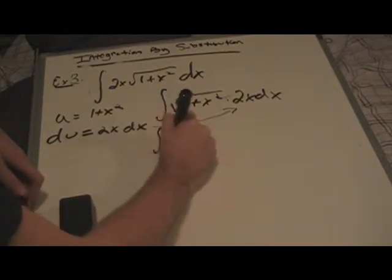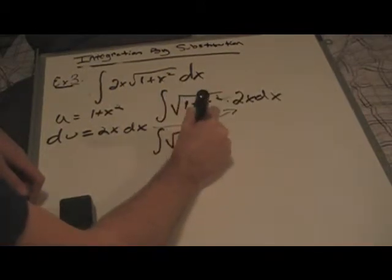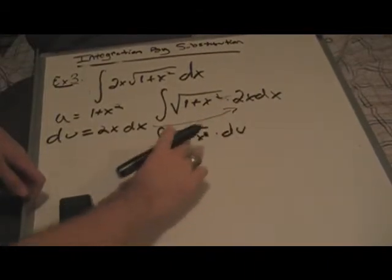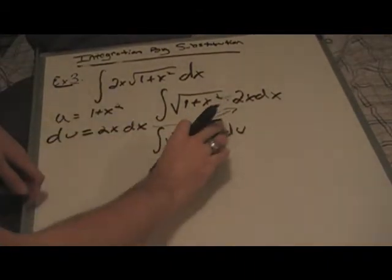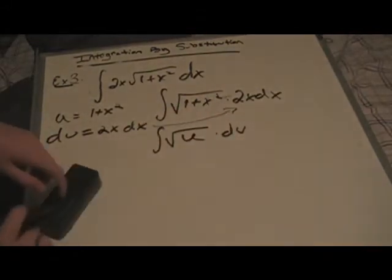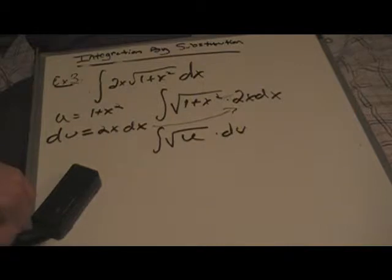So we move right into the square root of 1 plus x squared times du. And we also know this as u. So let's erase that. Put u right in this place.